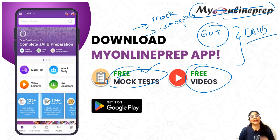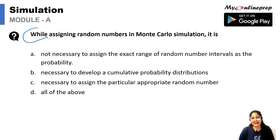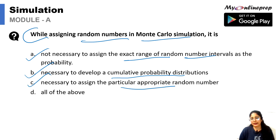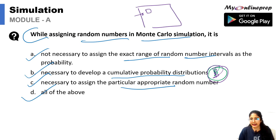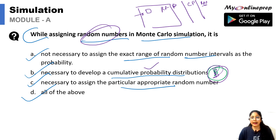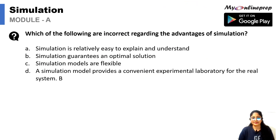While assigning random numbers in the Monte Carlo simulation, it is not necessary to assign the exact number of random number intervals. However, it is necessary to develop a cumulative probability distribution. The correct answer is option B, because applying cumulative frequency is very important. We cannot assign random numbers until we calculate cumulative probability — random number assignment requires cumulative probability to be derived first.